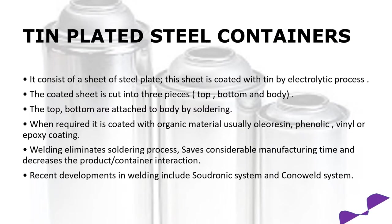Tin-plated steel containers consist of a sheet of steel plate coated with tin by electrolytic processes. The coated sheet is cut into three pieces — top, bottom, and body — which are attached by soldering. When required, it is coated with organic material such as oleoresin, phenolic, vinyl, or epoxy coating. Welding eliminates soldering and saves manufacturing time. Recent developments include the Soundronic system and Kono weld system.